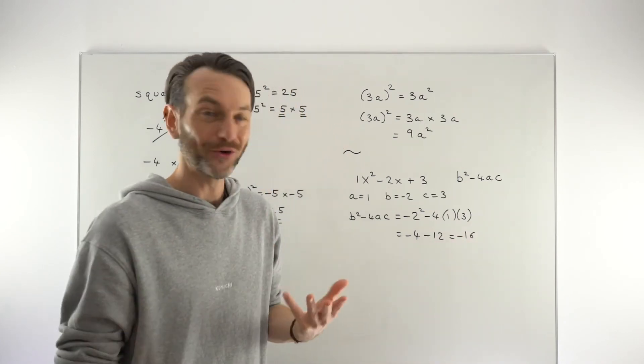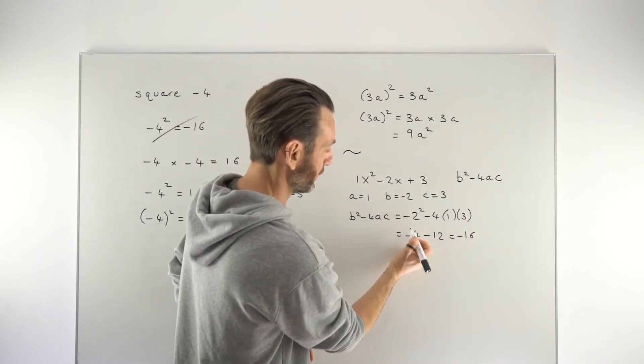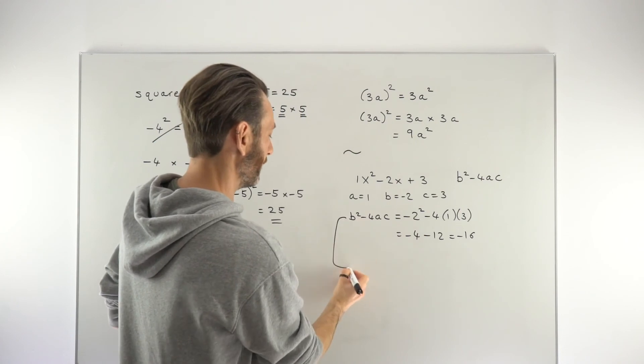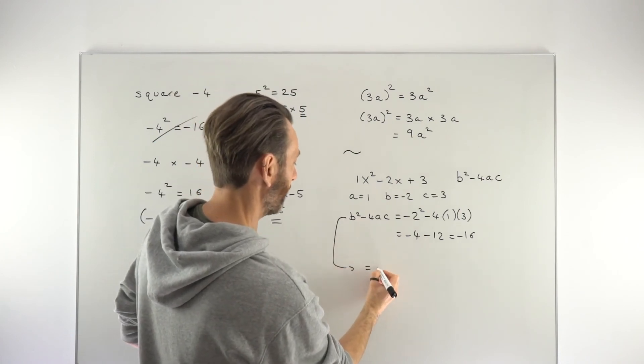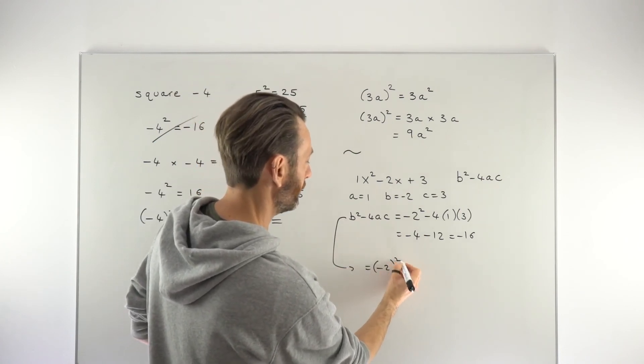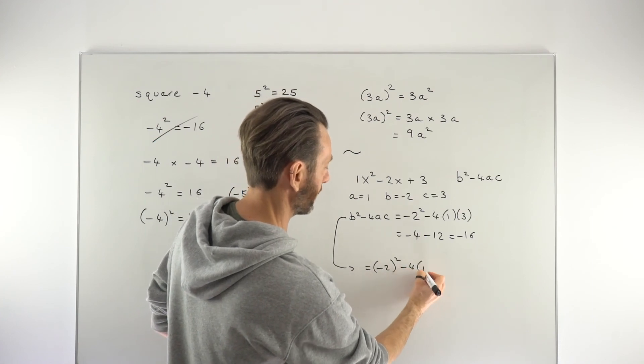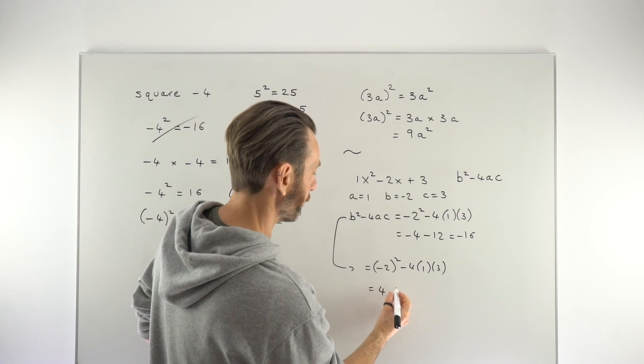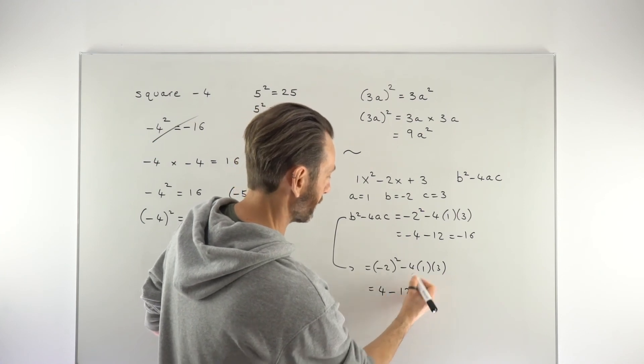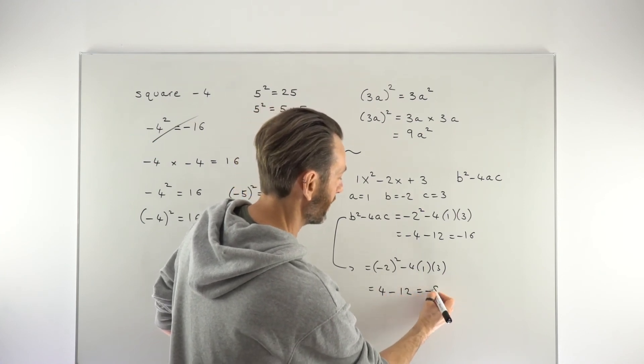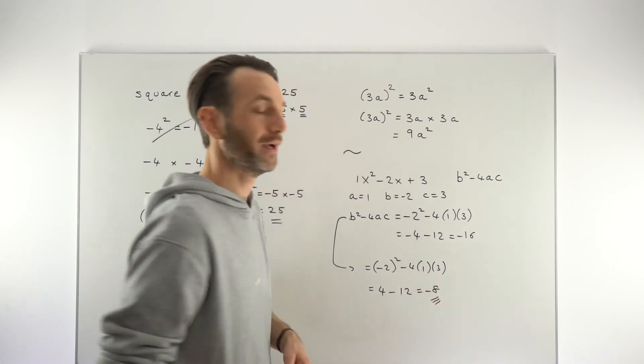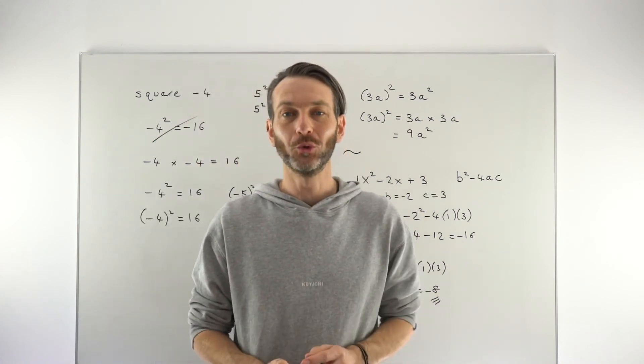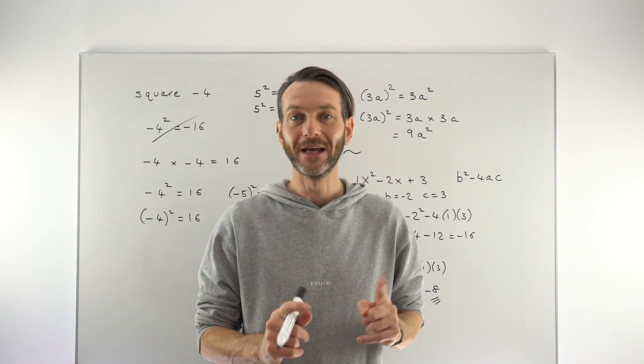Of course, that's not correct, because this here should have been in a bracket. What we should have done was make this minus 2 all squared minus 4 times 1 times 3. So minus 2 all squared is positive 4, not negative 4. This comes out to still be minus 12, giving us a correct final answer of minus 8. So that's just one instance in which to watch out for squaring negative numbers.